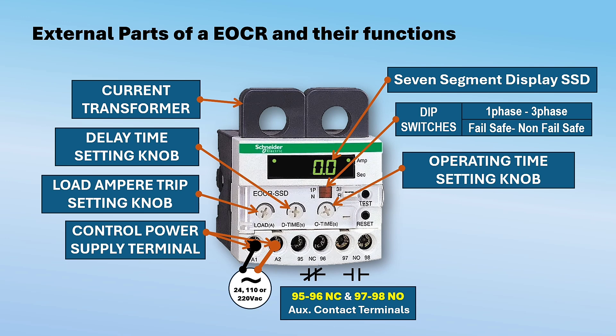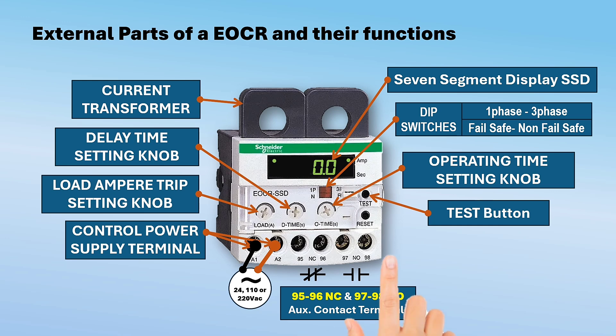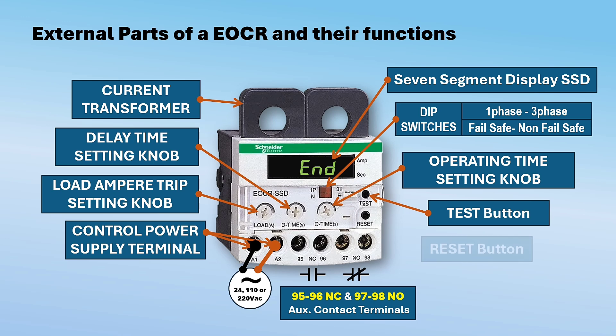Test button — it is a force trip button used to check the EOCR trip function and auxiliary contact status. The test function is only possible when the motor is in stop status and not possible while the motor is running. Reset button — depressing the reset button or interrupting the power supply to the EOCR returns the relay to normal pre-start condition.